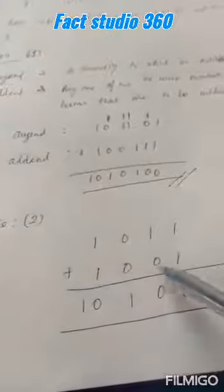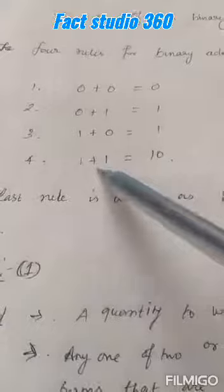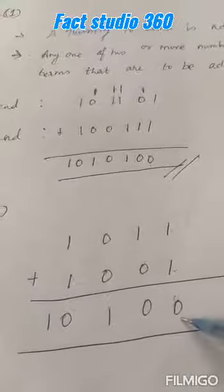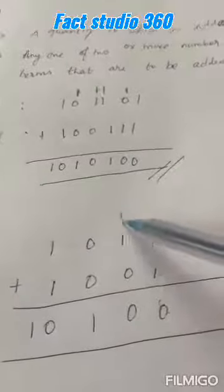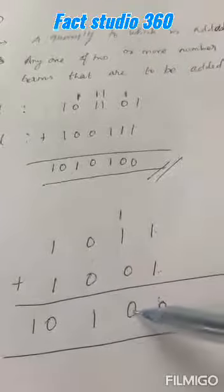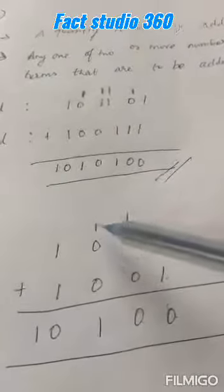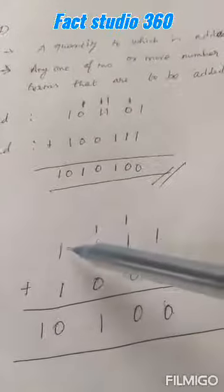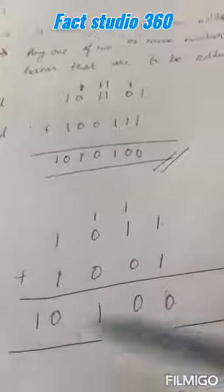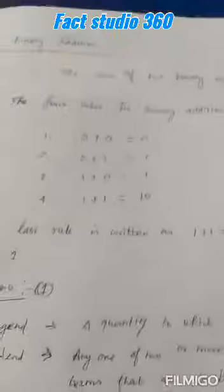Another example — it is the simplest example, just to compare to the last one. 1011 plus 1001. 1 plus 1 is equal to 10 by the fourth rule, so 0 is here and carry 1 goes to the next term. 1 plus 1 is again 10, so 0 is here and carry is taken forward. 1 is placed down there. The next term: 1 plus 1 is equal to 10. This is the addition of two binary numbers — the simplest way to understand binary addition.